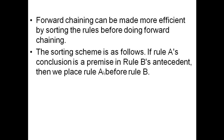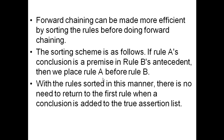Forward chaining can be made more efficient by sorting the rules before doing forward chaining. The sorting scheme is: if rule A's conclusion is a premise in rule B's antecedent, then we place rule A before rule B. With the rules sorted in this manner, there's no need to return to the first rule when a conclusion is added to the assertion list. If rule A concludes something and rule B follows it with that conclusion as a premise, it will already be concluded before you get to rule B.